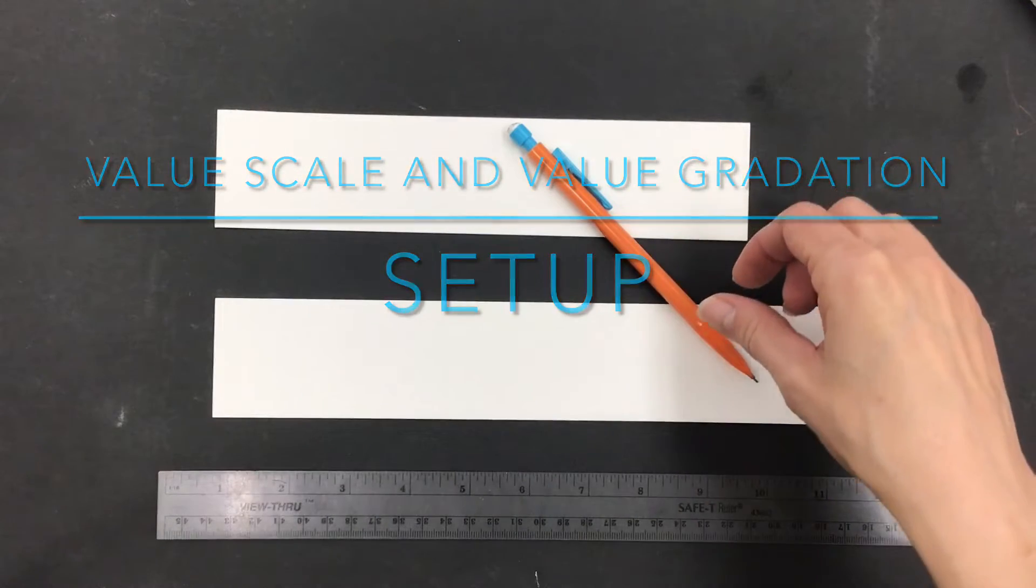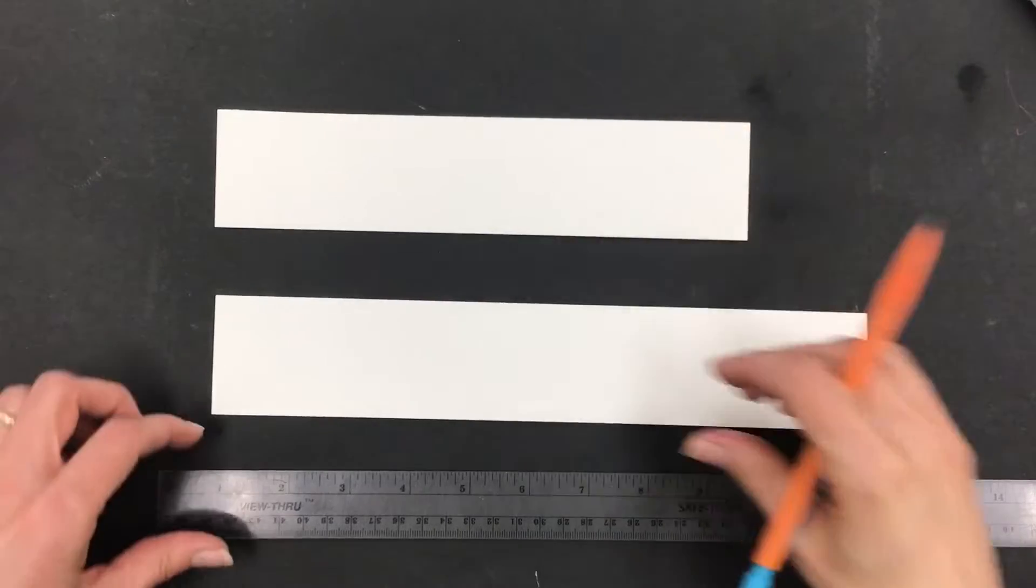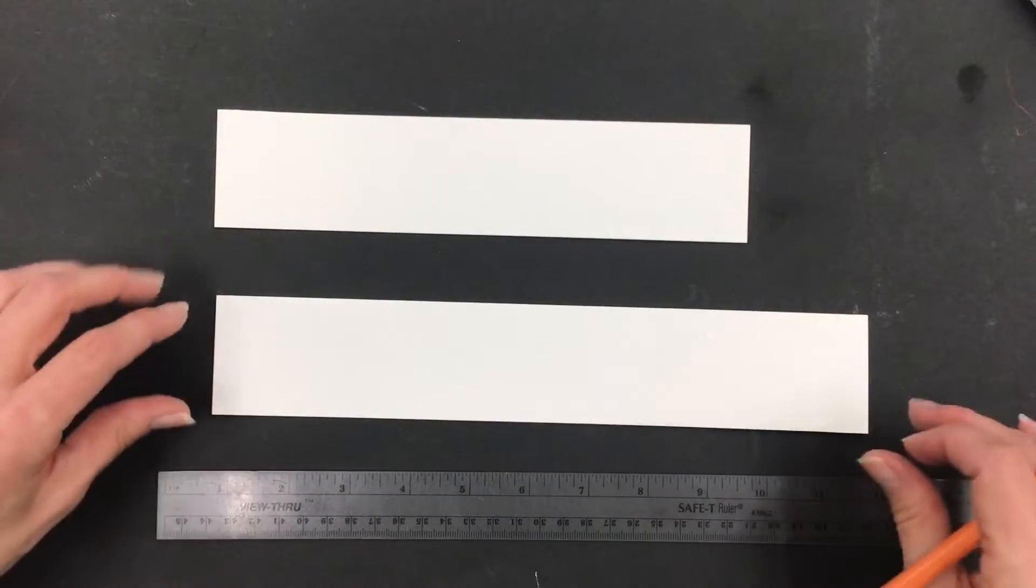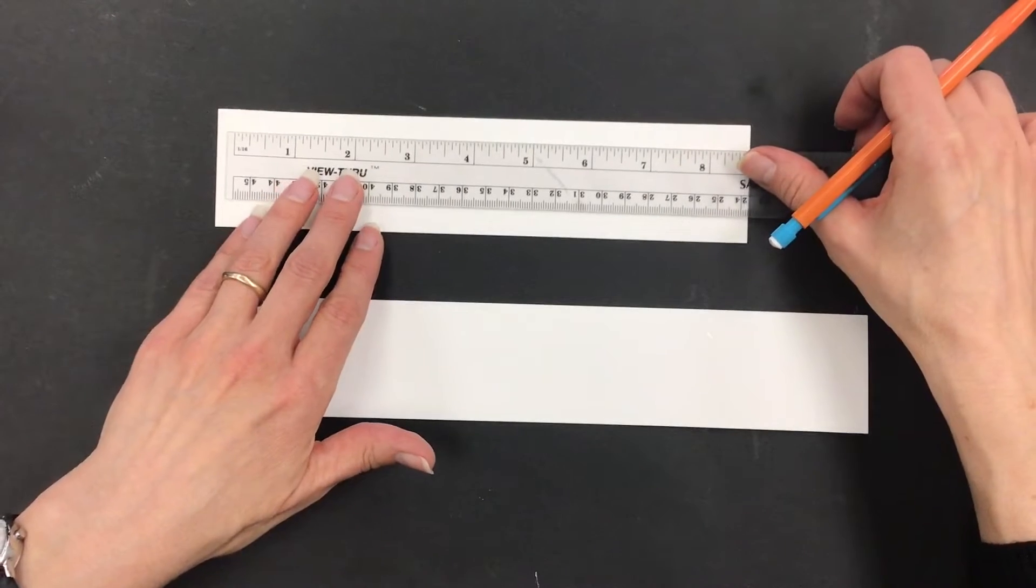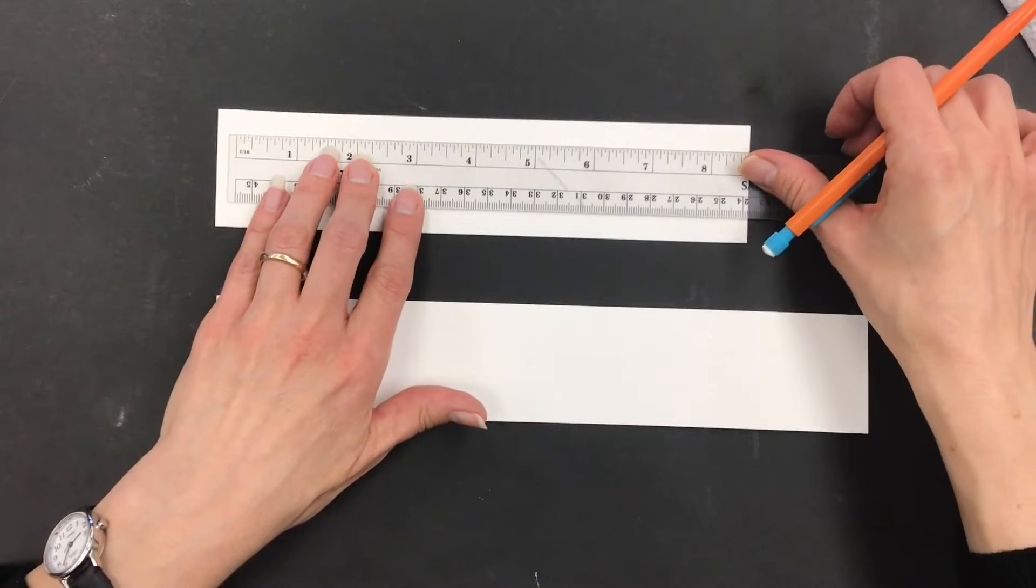So this is how I want you to set up for your value scale and your value gradation. We have two strips of paper here and a ruler, so I just want you to make a really simple shape for your value scale and value gradation.